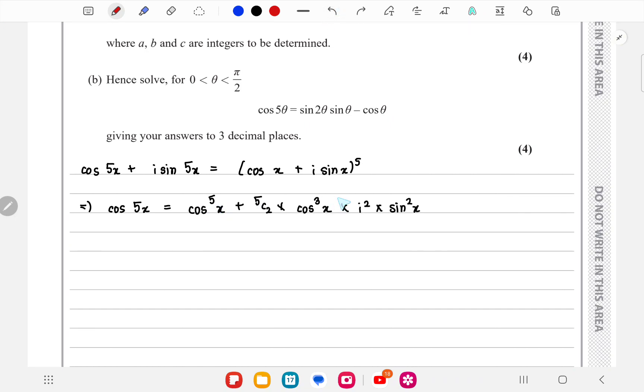cos to the power 5x plus 5C2 cos cube x into i² sin² x. i² will turn minus 1, and 5C4 cos x times i to the power 4 sin to the power 4x. i to the power 4 would be 1.